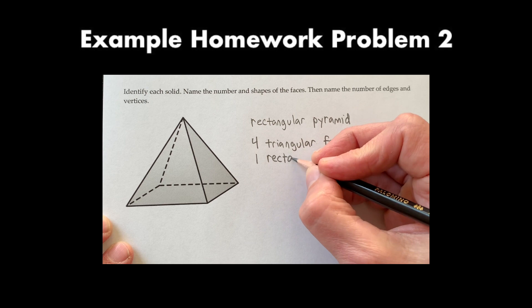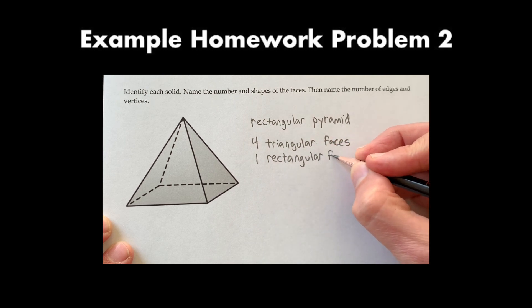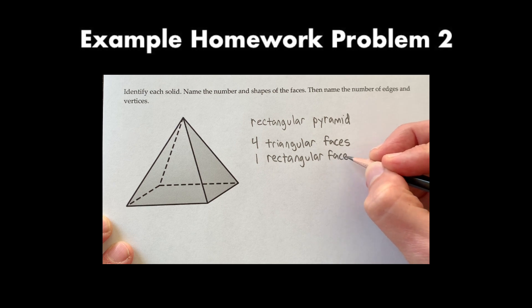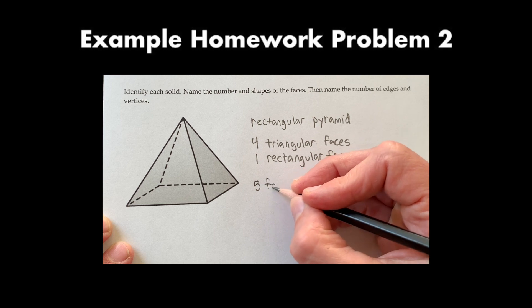So I'm going to write that four triangular faces. And if I look down there at the bottom, I see there is a rectangle down at the bottom. So that is one rectangular face. If you want to write the total here, you can. I'm going to go ahead and write five faces altogether.